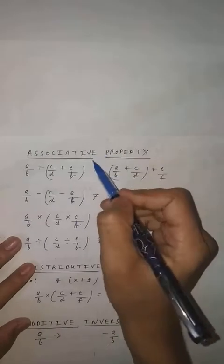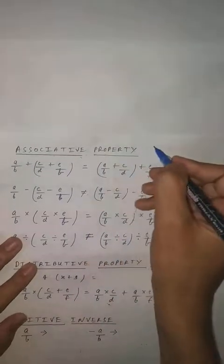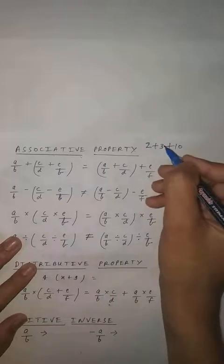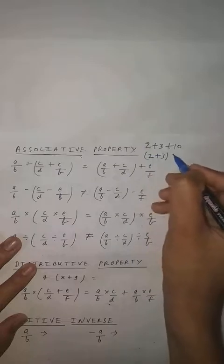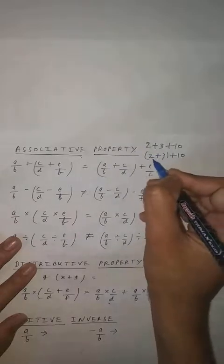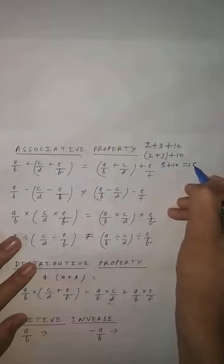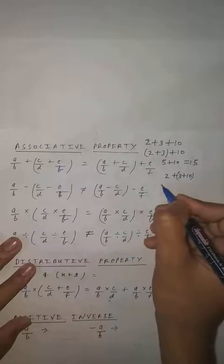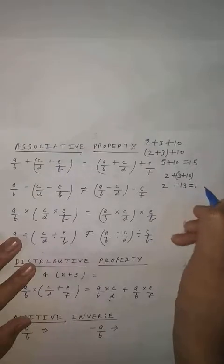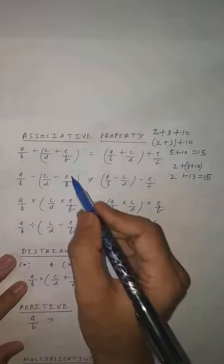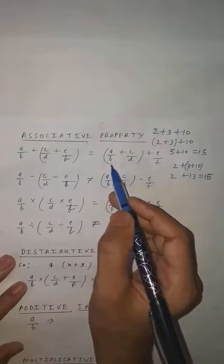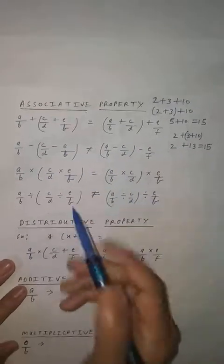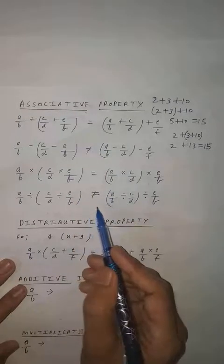Our next property is associative property. For this, just say if we have numbers 2, 3, 10. You can add directly or you can associate the numbers — like 2 plus 3 in one bracket plus 10. You solve the bracket first: 2 plus 3 is 5, then 5 plus 10 is 15. Or you can write 2 plus 3 plus 10 and the result is also the same. So in rational number, associative property addition exists. But in subtraction, associative property does not exist. In multiplication it exists, and in division it also does not exist.